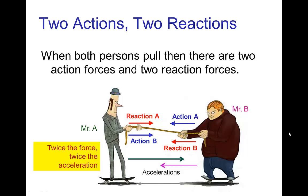Another situation: if instead of one character pulling, they both pull, then we have two actions — the pulling of each separate character — and then two corresponding reactions. So we have twice the force and twice the acceleration, assuming each one pulls with the same force. Mr. A is pulling on Mr. B — that's the first action-reaction pair — but then Mr. B is also pulling, so there's a second action-reaction pair. So there are two forces on Mr. A and two forces on Mr. B, meaning more force and more acceleration.